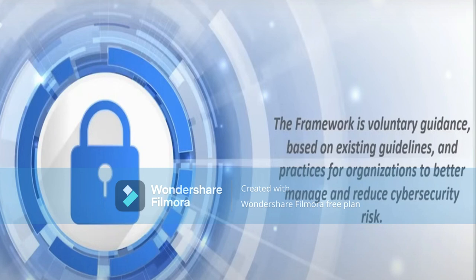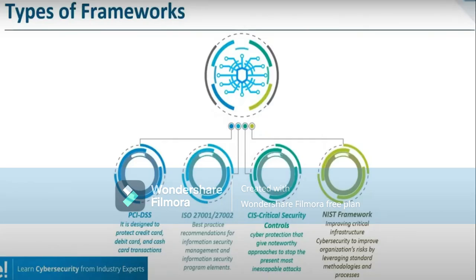The framework is voluntary and guides you based on existing guidelines and practices for organizations to better manage and reduce cybersecurity risk. Types of frameworks include: PCI DSS — designed to protect credit card, debit card, and cash card transactions; ISO — best practice recommendations for information security management and information security program elements; and CIS Critical Security Controls — a noteworthy approach to stop the most inescapable present attacks, improving critical infrastructure cybersecurity.